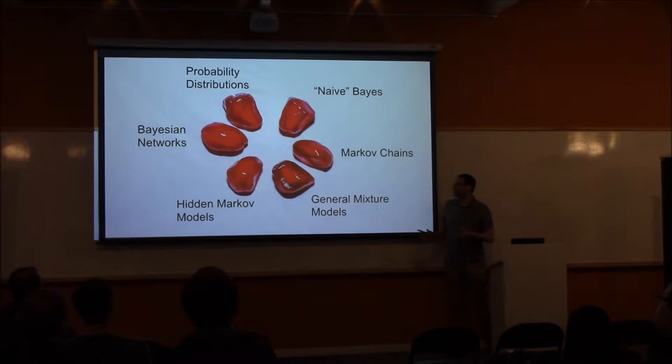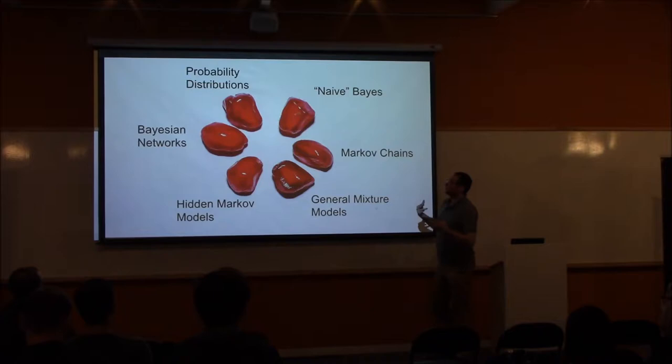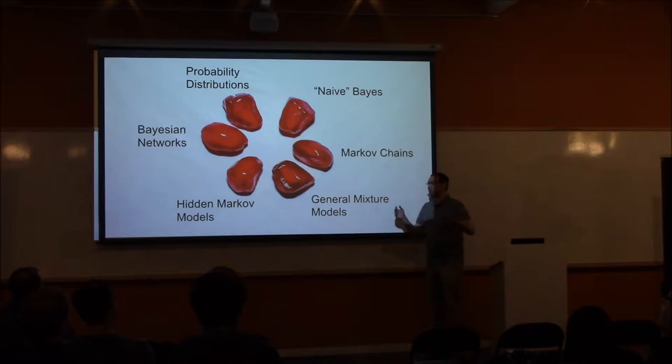I found a Wikipedia photo of pomegranate seeds, and there are six main models in pomegranate that correspond to the six seeds — so I'm taking this as a divine sign. There are six main components to pomegranate. The first are very basic probability distributions you're probably familiar with, like normal distributions and uniform distributions. Then we have naive Bayes, Markov chains, general mixture models, and other things like that.